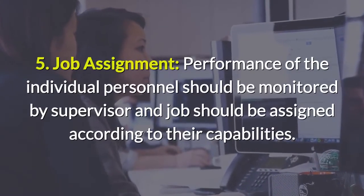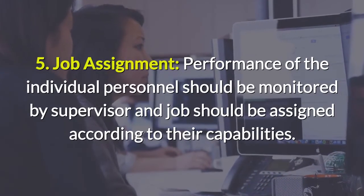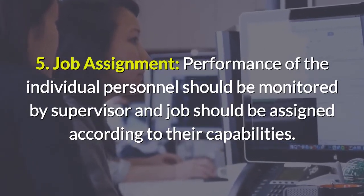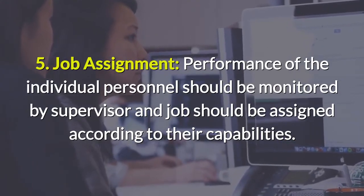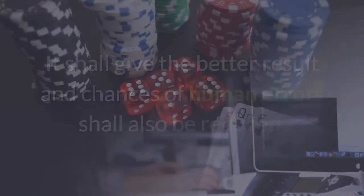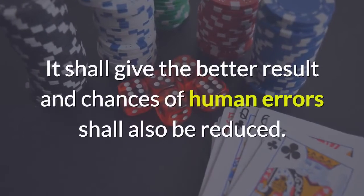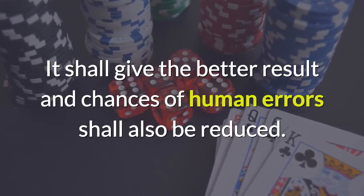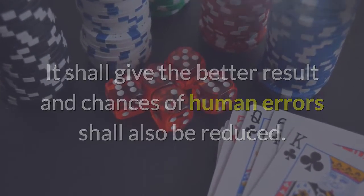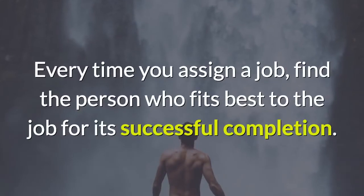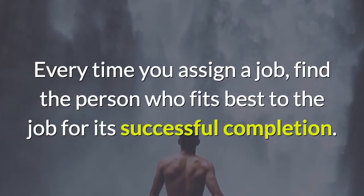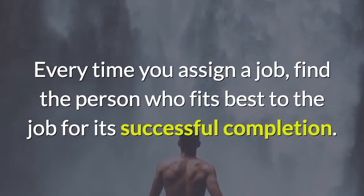5. Job assignment. Performance of individual personnel should be monitored by the supervisor, and jobs should be assigned according to their capabilities. This shall give better results and chances of human errors shall also be reduced. Every time you assign a job, find the person who fits best to the job for its successful completion.